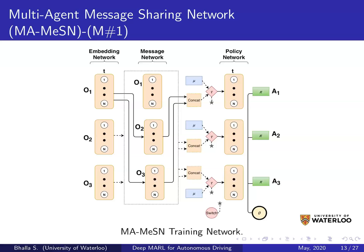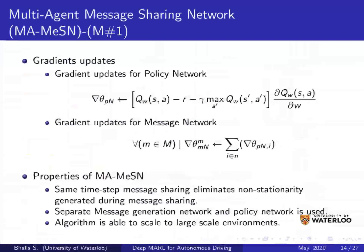The gradients for policy networks are computed in the same manner as regular DQN — prediction minus ground truth generated by a target network and reward. The gradients for the message network are the cumulative residual gradients received from all policy networks where the message was an input. Properties of MAMSN include same-time message sharing, which eliminates non-stationarity from delays between message send and receive time steps. The separate message and policy networks greatly improve results, and the algorithm scales easily to large-scale environments.